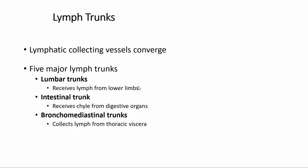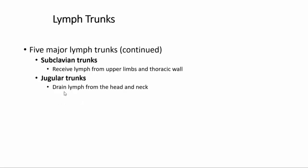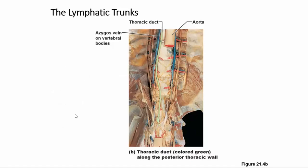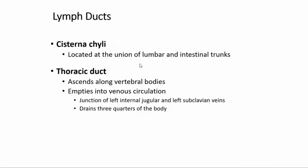Lymphatic collecting vessels converge into five major lymphatic trunks: lumbar trunk, intestinal trunk, bronchomediastinal trunks, subclavian trunks, and jugular trunks. These trunks are important for moving all lymph from the body. Lymph is conventionally shown in green color in diagrams, though sometimes white is used because lymph contains significant fat and is actually colorless or slightly white in appearance.